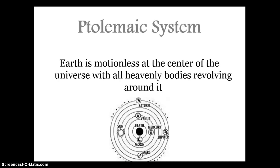Next up is the Ptolemaic system: Earth is motionless and at the center of the universe, with all heavenly bodies revolving around it. At the time of the Enlightenment, we're going to start making scientific discoveries that prove Earth is not the center of the universe. But before that, people believed that Earth was the center.